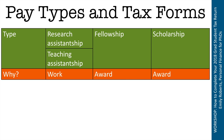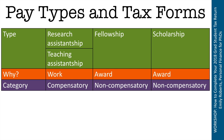It may seem strange or even insulting to hear that you are not working for your fellowship income. Of course, you're going through all the same activities a research assistant would, but the difference is where your money is coming from. Fellowships are given to further your own individual work toward your dissertation, whereas with a research assistantship you'd generally be working off a grant. Throughout this workshop, I'll use two terms: compensatory pay comes from work — those are assistantships — and non-compensatory pay covers fellowships and scholarships.